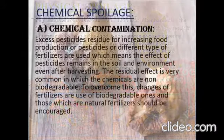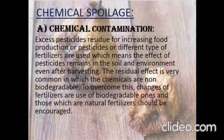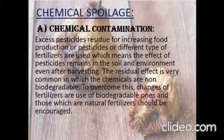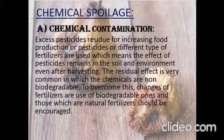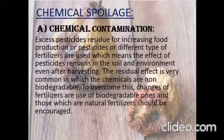Chemical spoilage includes spoilage due to chemical contamination, rancidity, enzymatic browning, and non-enzymatic browning reactions. Chemical contamination includes pesticides and fertilizers which are used to increase food production. The excess residues remain in the soil and environment even after harvesting. To overcome this spoilage, the use of biodegradable pesticides and natural fertilizers should be encouraged.